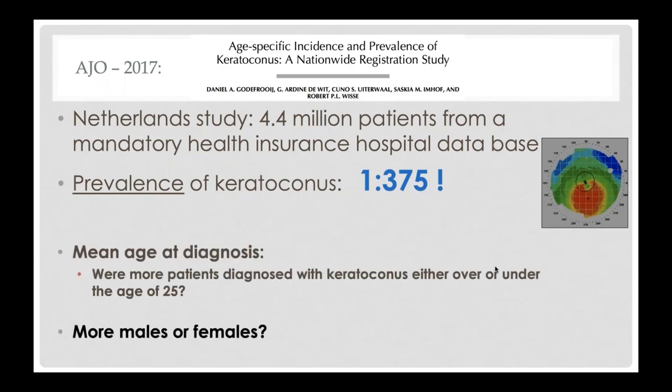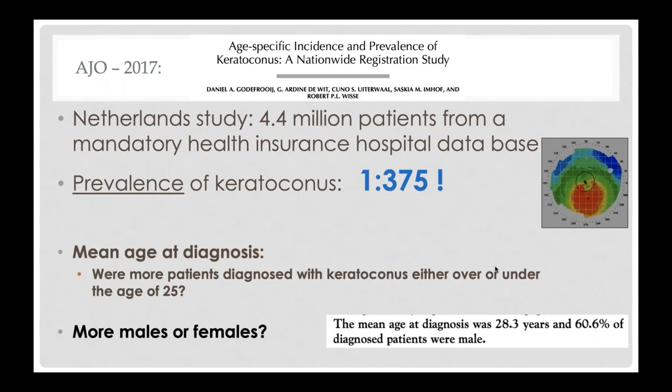As far as age of diagnosis, in this study the average age was 28.3. However, patients in their 30s, 40s, and 50s are often being diagnosed for the first time. Whether that means they didn't have signs of keratoconus until then or were just never diagnosed is hard to tell. But a lot of patients are diagnosed later in life.